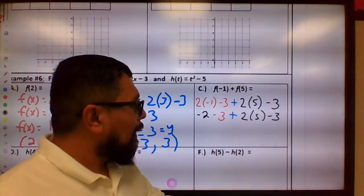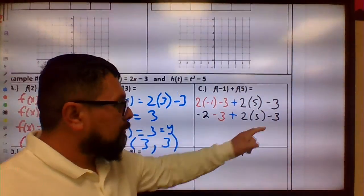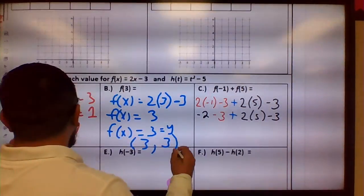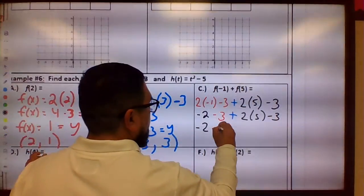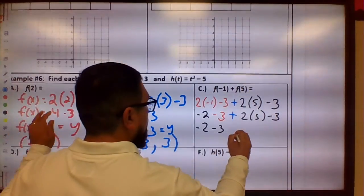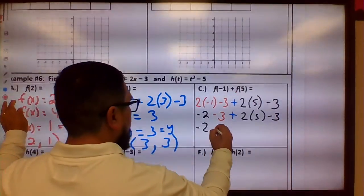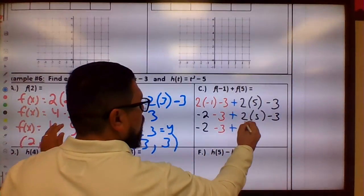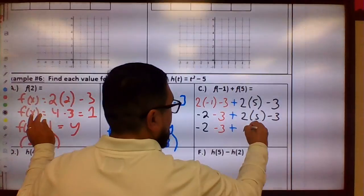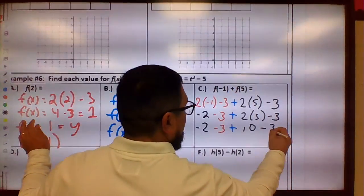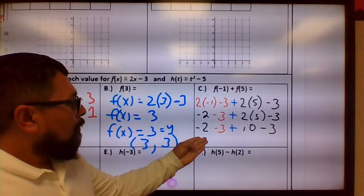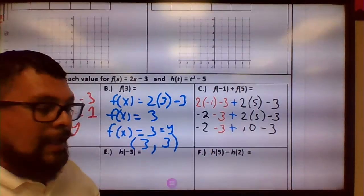We go from left to right again, so we have multiplication here, so we're going to go ahead and go, 2 times 5 is 10.